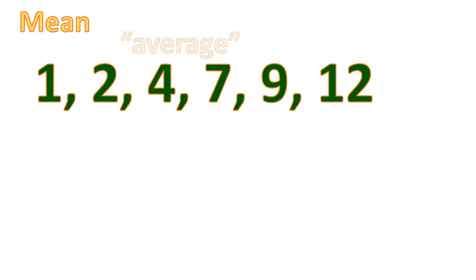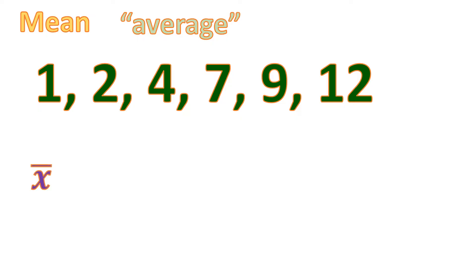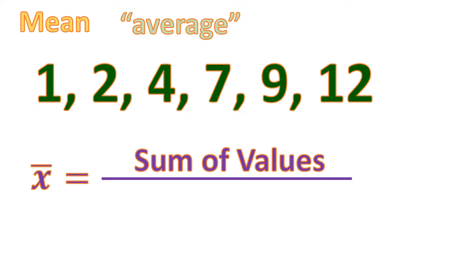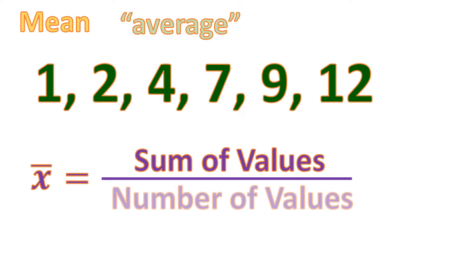So let's have the set of numbers again, and we're going to find the mean. Mean is what you call the average. If you know how to find the average, that's actually the mean. Mean is denoted by the symbol x-bar. The formula to find the mean is: it is equal to the sum of the values — meaning you add all the numbers — divided by the number of values, meaning how many numbers there are. Here in this case, it's 6.